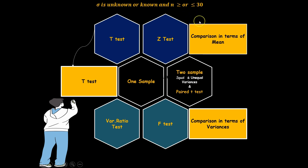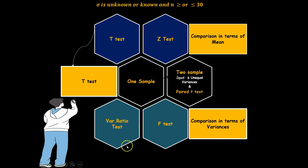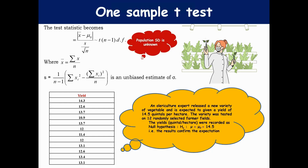The t-test is typically used when sample size is less than 30, but the key distinction between t and z is really about the standard deviation: if it is known, we use z; if it is unknown, we use t. We have different forms of t-test: one-sample, two-sample with equal or unequal variances, and paired t-test for correlated variables. When comparing things in terms of variances, we use the variance ratio test, also known as the f-test, which plays an important role in analysis of variances.